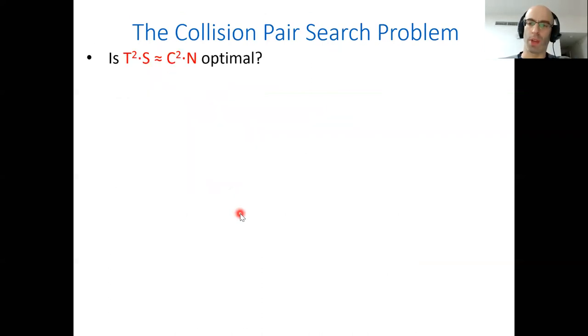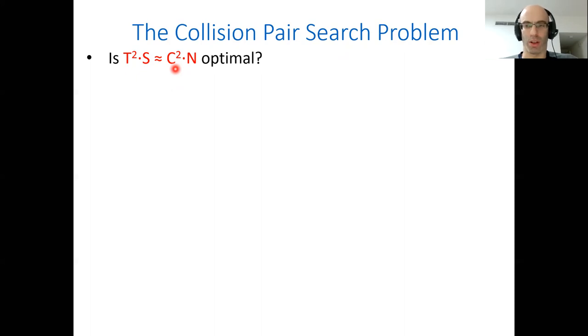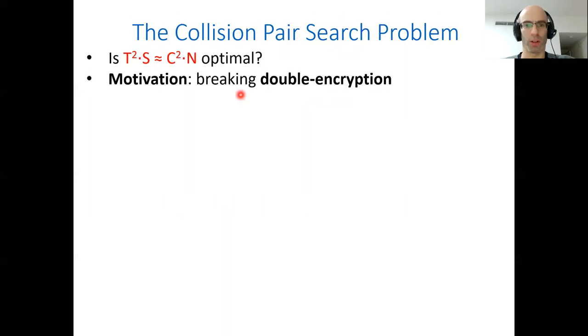The question is whether this trade-off is optimal. Before diving in, let me motivate it — why is this interesting? Notice that when s is smaller than c, which is the parameter range we're considering, you cannot store the output because you don't have enough space. So it's interesting in terms of applications, and it turns out that it is. I'll give you an example which is actually quite important.